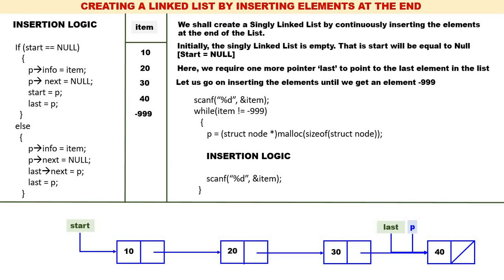One important point: in the insertion logic, the condition where start is equal to null — the then part — is executed only once, at the beginning, when inserting the first node. In our case, four nodes were created, so start is equal to null is executed only once, and the else part is executed three times. Start equal to null happens only at the beginning; in all remaining cases the else part is executed. The logic is quite simple and straightforward.